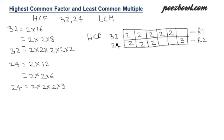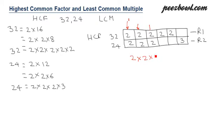To find the HCF, we multiply the numbers which are common in both rows for each column. In column one, two and two are common; in column two, two is common; in column three, two is common. In columns four, five, and six, 32 has a two but 24 has no corresponding entry. So we multiply two three times, giving us HCF = 8.